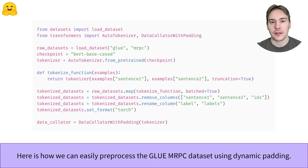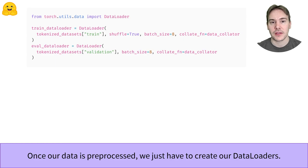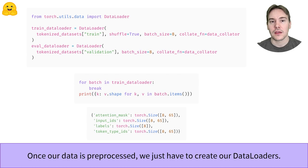We'll use the GLUE MRPC dataset here again, and we've seen how to pre-process the data using the Datasets library with dynamic padding. Check out the videos linked below if you haven't seen them already. With this done, we only have to define PyTorch data loaders, which will be responsible to convert the elements of our dataset into batches. We use our data collator for padding as the collate function and shuffle the training set to make sure we don't go over the samples in the same order at each epoch.